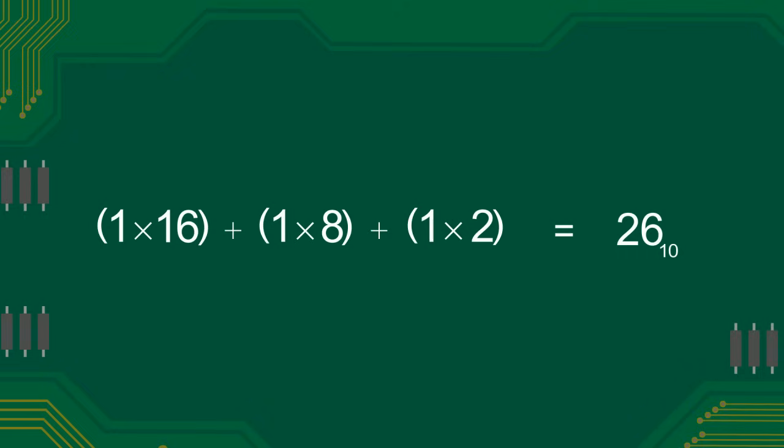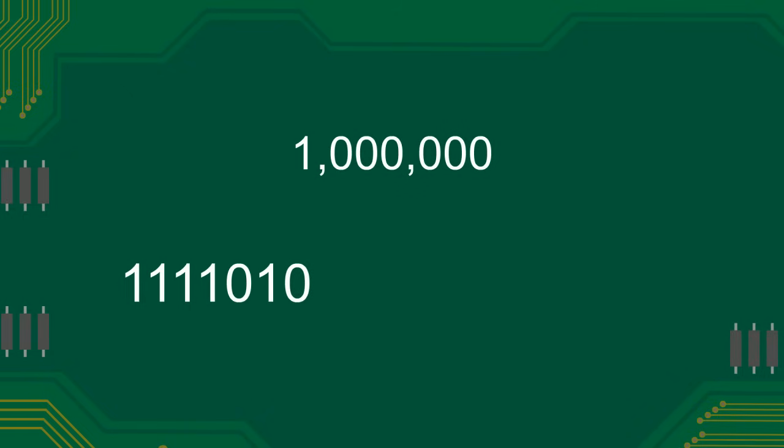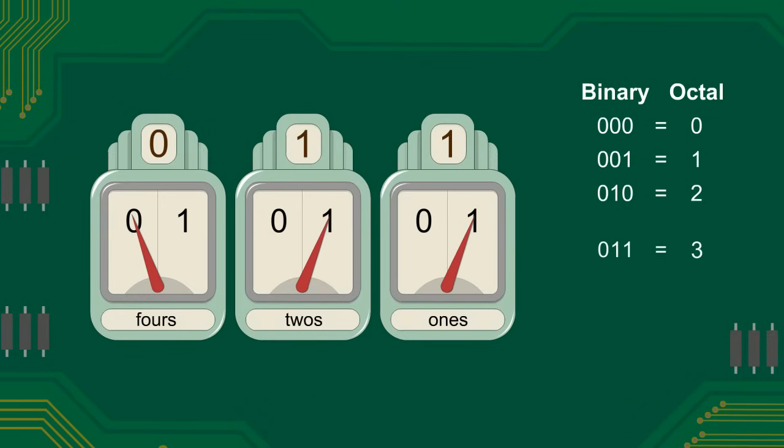Even though digital computers store numbers in binary, it can be quite tedious to write down or remember large binary numbers. For instance, the number one million in binary is one one one one zero one zero one one zero zero zero zero. Early in the history of digital computers, engineers found that it was easier to use octal notation than to deal with long strings of ones and zeros.